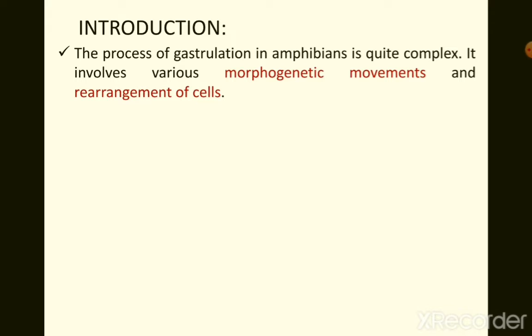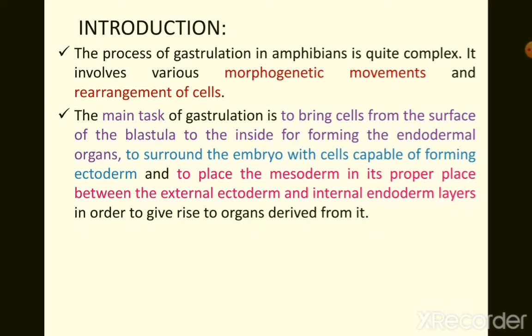Gastrulation involves various morphogenetic movements and rearrangement of cells. This process appears quite complex in amphibians compared to amphioxus. The main task is to bring cells from the surface of the blastula to the inside to form endodermal organs, to surround the embryo with cells capable of forming ectoderm, and to place the mesoderm in between ectoderm and endoderm.